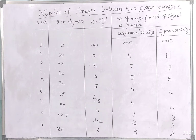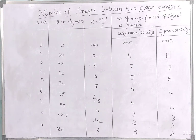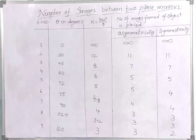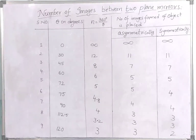In the sixth situation, the angle is 75 degrees. So n = 360/75, which gives 4.8. Whenever we get a decimal like 4.8 or 4.2, we neglect the digit after the decimal point and take only 4. So when the object is placed asymmetrically, the number of images is 4, and when placed symmetrically, it is also 4.